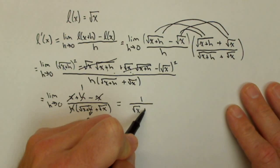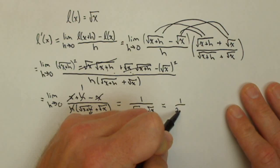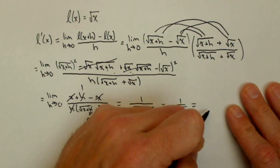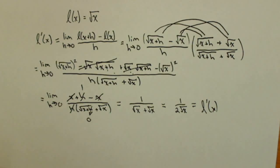Square root of x plus square root of x which is one over two square root of x. Which is in fact my derivative L prime of x using the definition of the derivative.